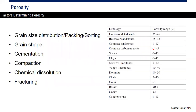Factors determining porosity include grain size distribution, packing or sorting of grains, grain shape, cementation, compaction, chemical dissolution (resulting in secondary porosity), and fracturing. Another table provides typical porosity ranges for each lithology — from unconsolidated sands to compact sandstone to conglomerate rock. You don't need to memorize these; use them when you don't have an actual measured value.